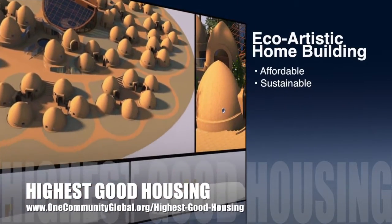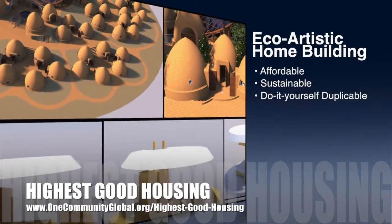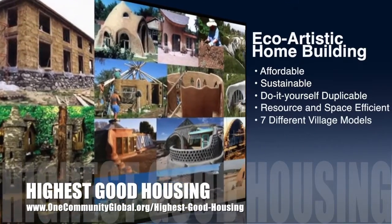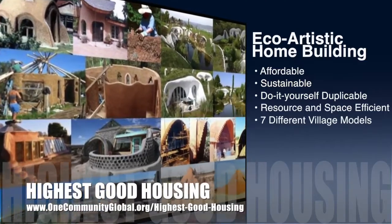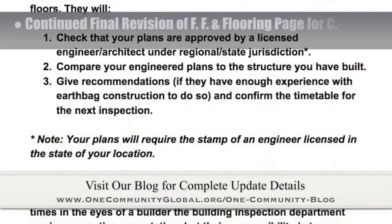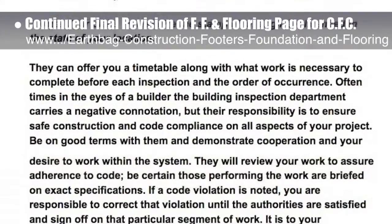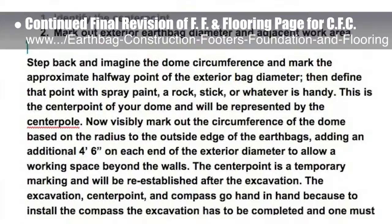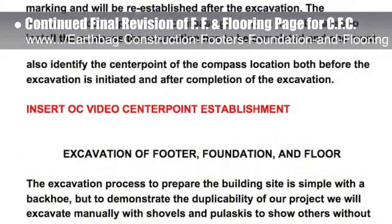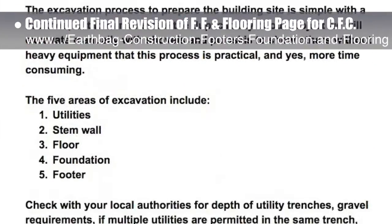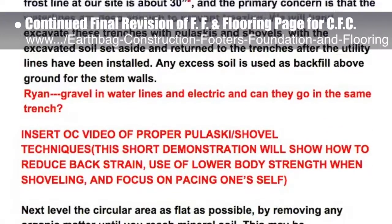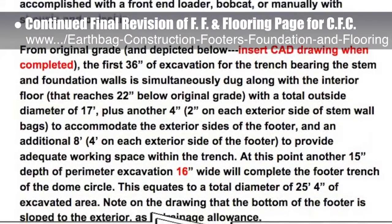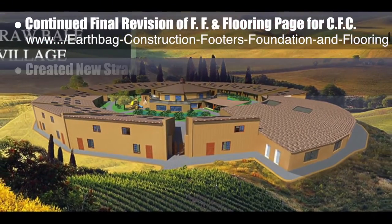The One Community approach to highest good housing is eco-artistic home building that is affordable, sustainable, do-it-yourself, duplicable, resource and space efficient, and consists of seven different sustainably constructed village models. This last week the core team working on highest good housing put another 10 hours into the behind-the-scenes revisions for the footers, foundation, and flooring page of the upcoming crowdfunding campaign. This week's focus was footer widths and form specifics, edits of excavation and center point reestablishment, and compass installation details. We'd say this brings us to 54% complete with the total rewrite and update. We also created the new straw bale village pod 2 header and updated the straw bale village pod 2 page with it.